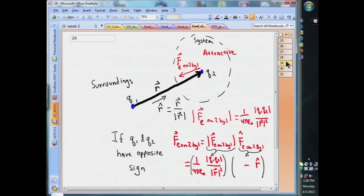However, if Q1 and Q2 have opposite sign, then the product is negative, and so the direction of the electric force is in the direction of minus R hat, which makes sense in this case because our system is attracted by the object in the surroundings.